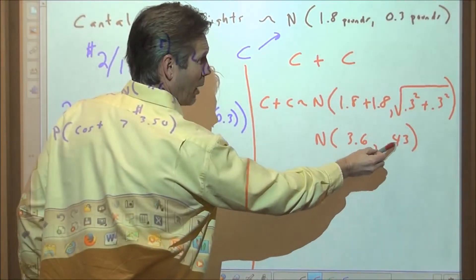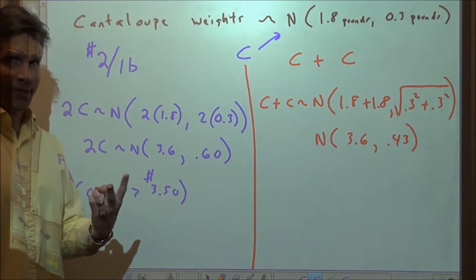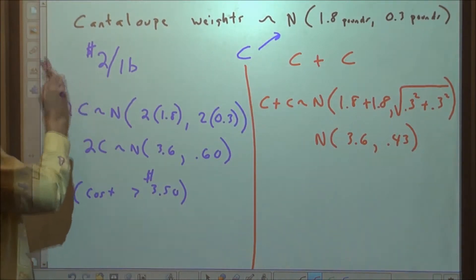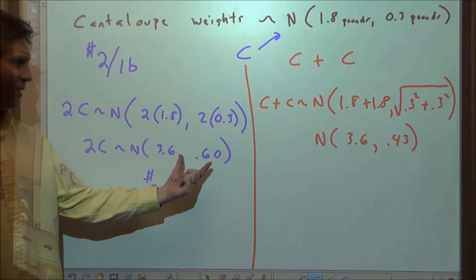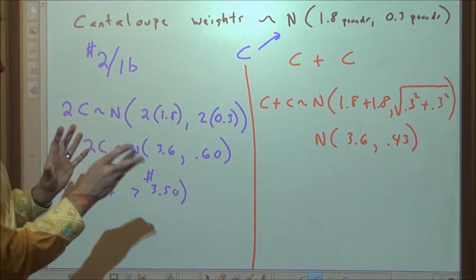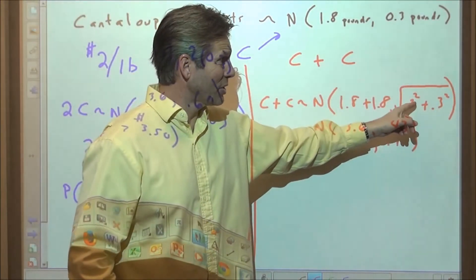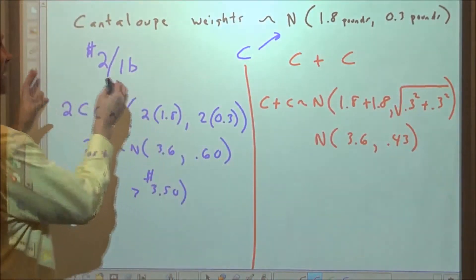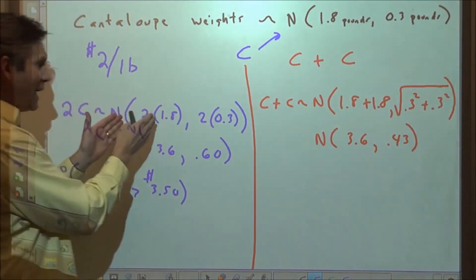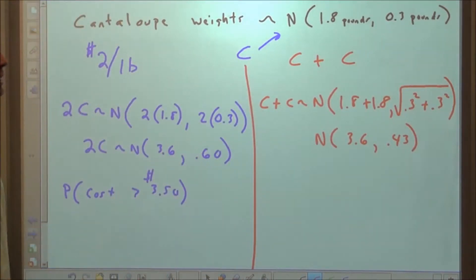When you take a joint distribution and add two things together, the standard deviation is found by first adding the variances together, then taking the square root. That gives us a smaller standard deviation than the linear transformation case, where we take one cantaloupe and multiply it by 2. With a linear transformation, the standard deviation is $0.60; with the joint distribution, it's about 0.43 pounds. They're two different things — and that's one of the trickiest distinctions in these problems.